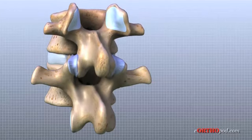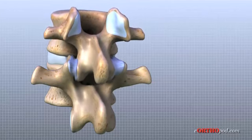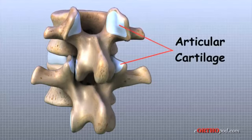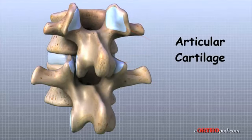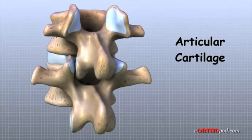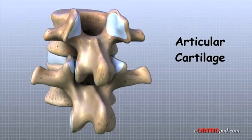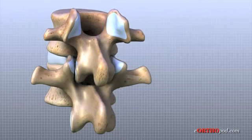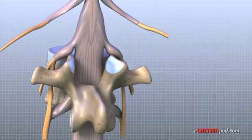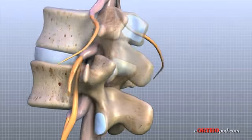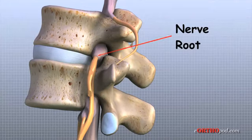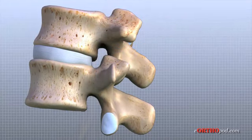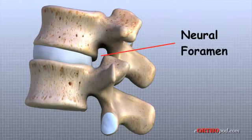The surfaces of the facet joints are covered by articular cartilage — a smooth rubbery material that covers the ends of most joints, allowing bone ends to move against each other smoothly without friction. Two spinal nerve roots exit the sides of each spinal segment, one on the left and one on the right. As the nerves leave the spinal cord, they pass through a small bony tunnel on each side of the vertebra called a neural foramen.